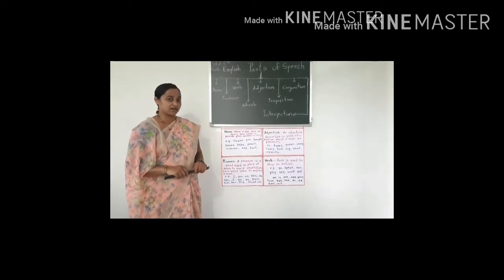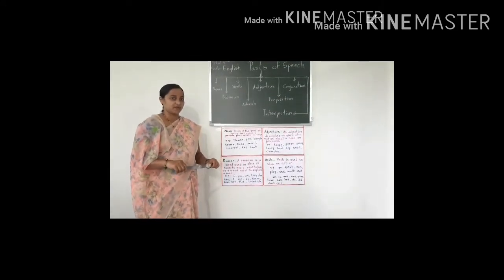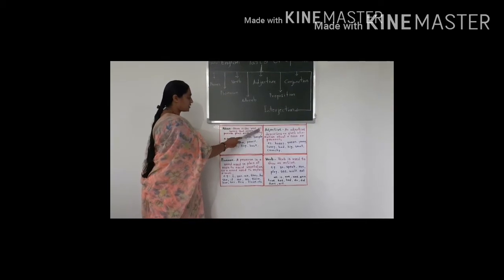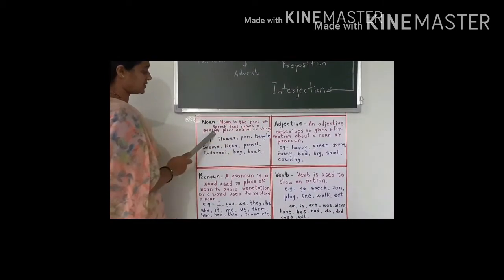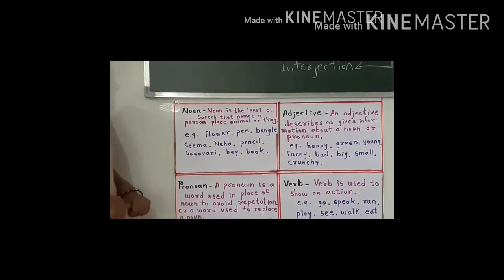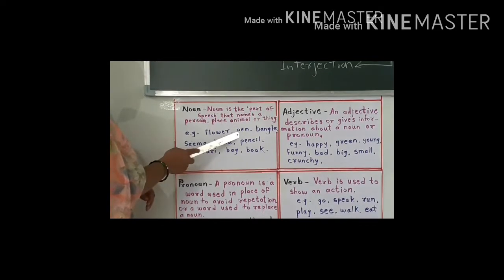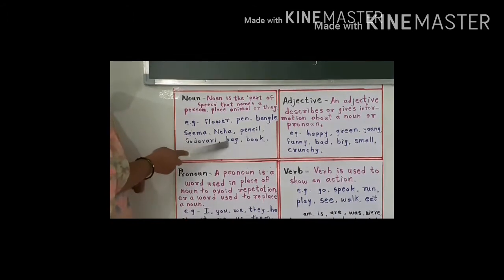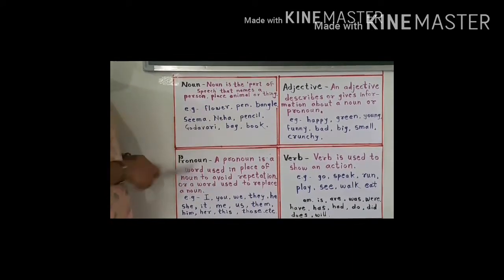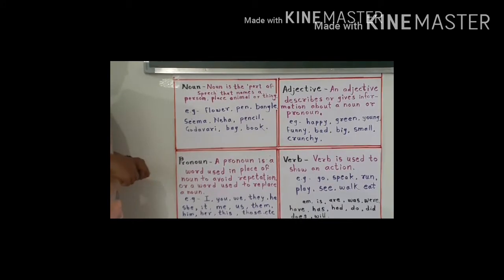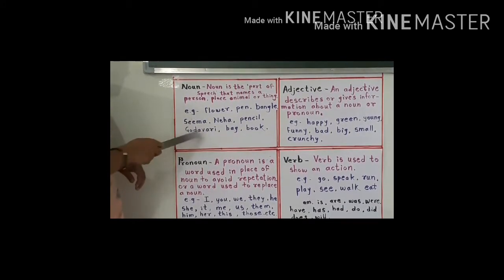Let us learn in detail all these eight parts of speech. The first part of speech is noun. Noun is the part of speech that names a person, place, animal, or thing. For example: flower, paint, Bengal, Seema, Neha, pencil, Godavari, bag, book. All these words are called nouns because they are the names of things or persons. In this way, all these words are nouns.